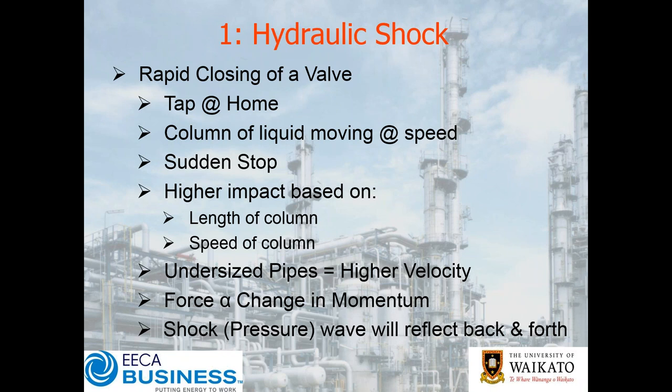What's happening is you've got water flowing down a pipe — a certain mass of liquid moving at speed. When you shut the tap off, if it shuts off really quickly, that moving fluid has got nowhere to go. In a liquid system, water is by and large an incompressible fluid, so it can't compress against the tap. You end up with a pressure pulse that bounces up and down the pipe because there's a sudden change. We get a bigger impact based on the length of the column and the speed of the column.